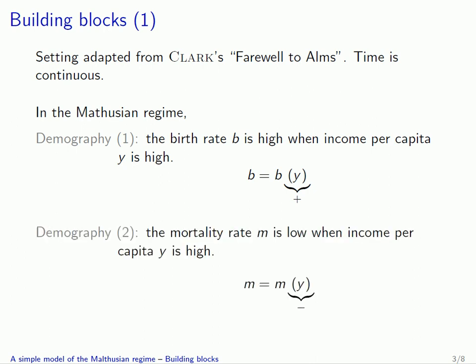The second demographic assumption concerns the mortality rate, small m, which is assumed to be lower when the income per capita, small y, is high — due, for instance, to the availability of medicine.